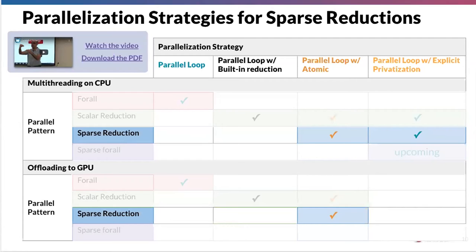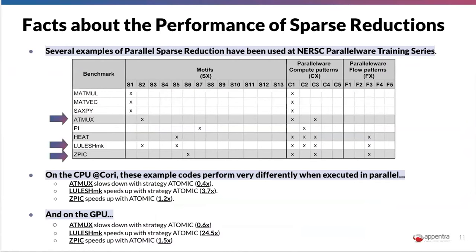We have been playing with the most basic one — the atomic — because it is the most simple to implement and is available both on CPU and GPU. This is the reason why we selected atomic, for comparison reasons. Also, if you remember, we started last week with a set of benchmarks, a table characterized in terms of motifs and compute and flow patterns.